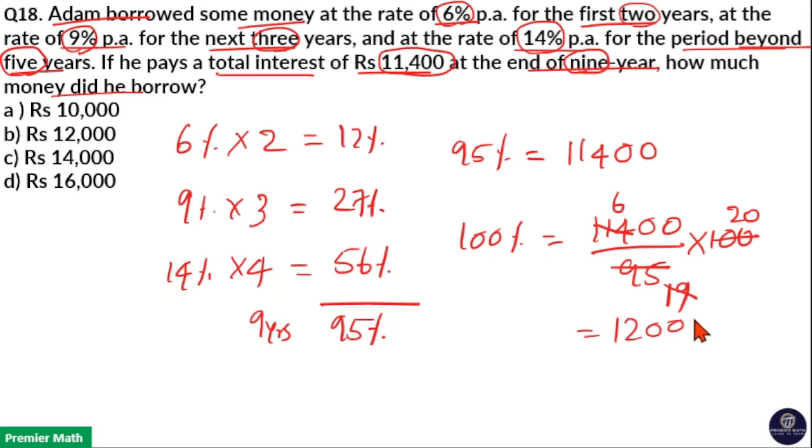12,000 rupees is the sum here. That is the principle here. So option B is your answer.